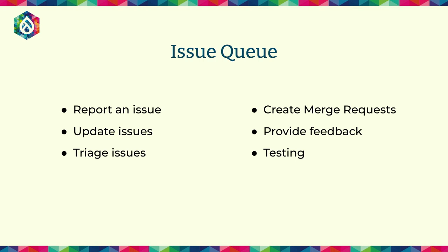The issue queue is a list of tasks. The word 'issue' might sound like a problem, but they're not necessarily problems — they're just tasks. Sometimes it's a bug, sometimes a feature request, sometimes a decision-based question like which language style to use. Anything like you might have in Jira goes into the issue queue. Right now we're talking about the core issue queue, not the contrib issue queues, though every single contrib module has its own issue queue.